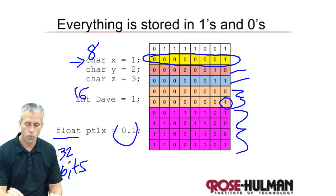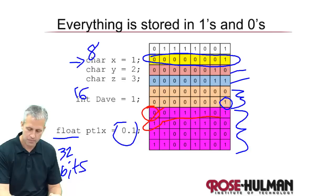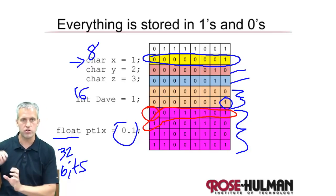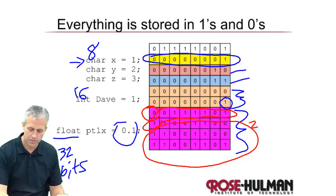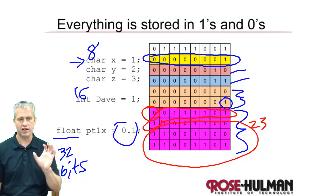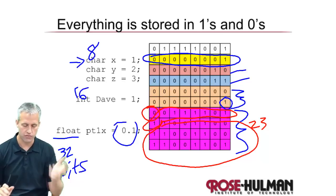To store a value like 0.1 as a float, the 32 bits break down as follows: 1 bit is used to store the sign, 8 bits store the exponent — that's the 'times 2 to the power of something' part — and the remaining 23 bits are called the mantissa, which holds the 'something' in 'something times 2 to the exponent.'